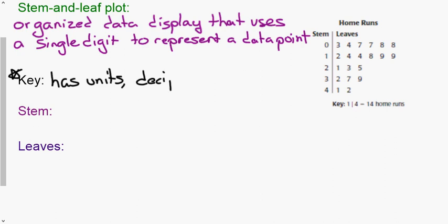Because we only use a single digit the key tells us are we dealing with point three or three. Here our key says 1 bar 4 represents 14 home runs. We could also be talking like miles and it could be 1.4 miles, the only way you know the difference is because of the key.